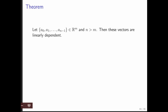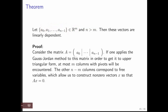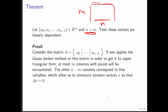Here's a theorem: if you have n vectors all in Rᵐ and you have more vectors than the length of the vectors — that is n > m — then these vectors must be linearly dependent. The proof is to think of this as a matrix, which is m by n, meaning more columns than rows. That means more variables than equations, which inherently means there are vectors in the null space, and therefore the columns must be linearly dependent.